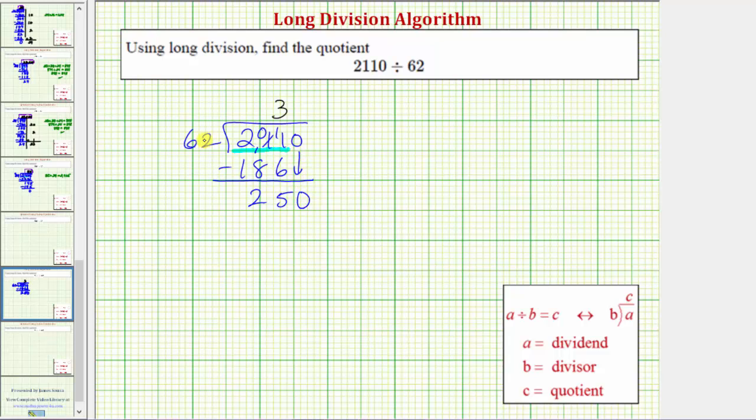Now we need to consider how many 62s are in 250. Again, we could round both values to the tens place value, which would give us 250 divided by 60. Because four times 60 equals 240 with a remainder of 10, or four 60s in 250, it's reasonable to assume there would be four 62s in 250 as well.